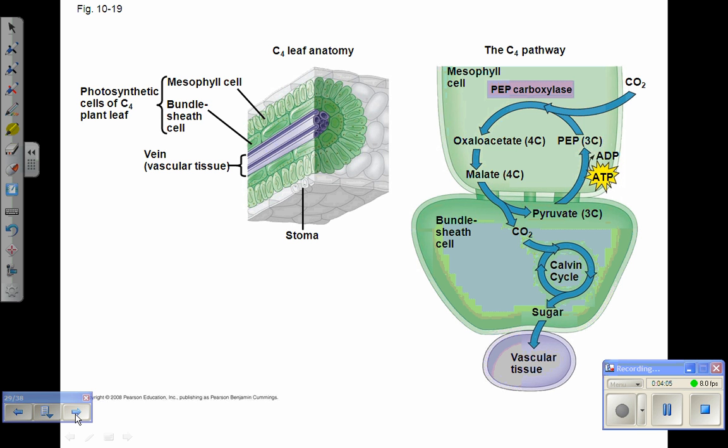C4 plants are recognizable by their unique leaf anatomy. They have rows of mesophyll cells surrounding a column of cells called bundle sheath cells. These bundle sheath cells themselves surround the vascular bundle or vein of the leaf. The mesophyll cells and bundle sheath cells are physically connected to each other by means of plasmodesmata.